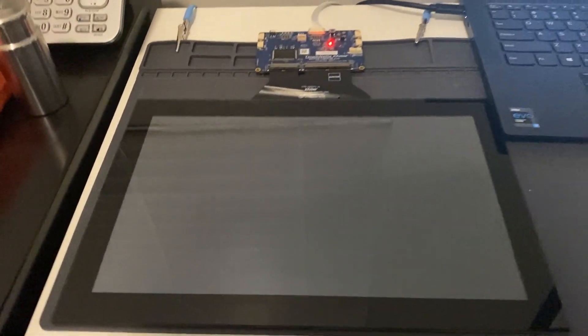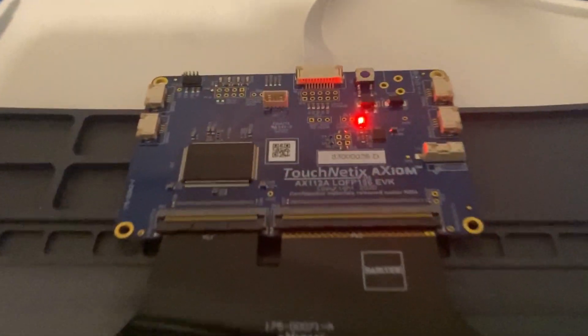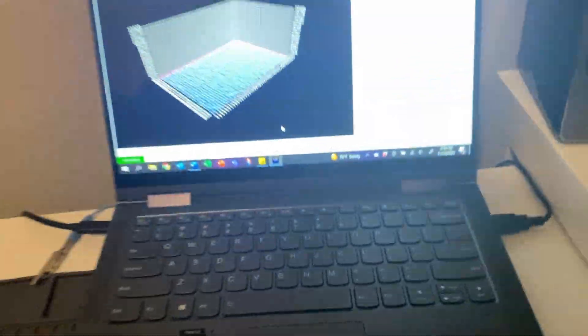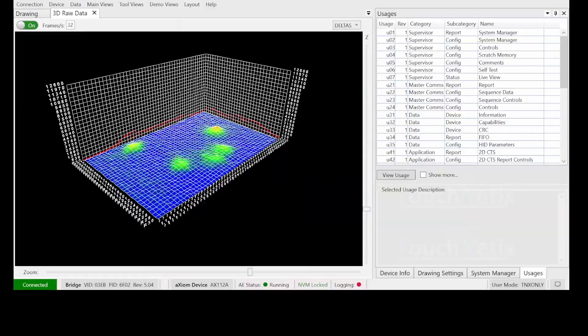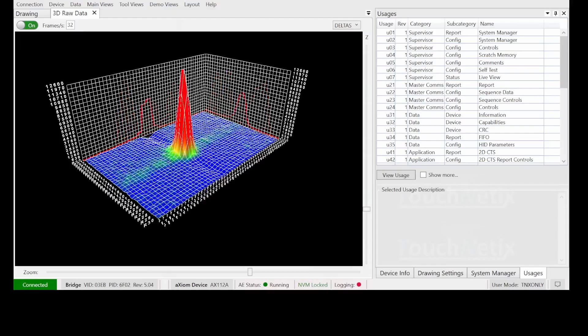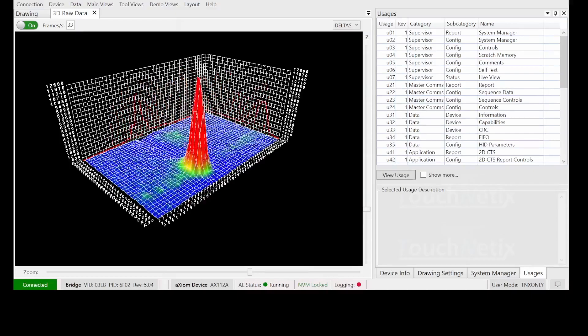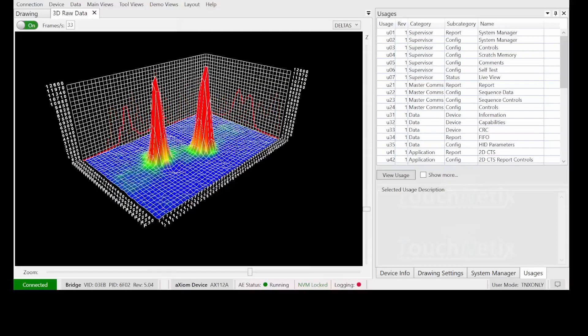So, here's our standard 12.1-inch EVK. It's connected via a USB bridge to a PC, running our TouchHub 2 software. When I press down, you can see just how much signal we are really getting, in comparison to essentially no noise in the system.